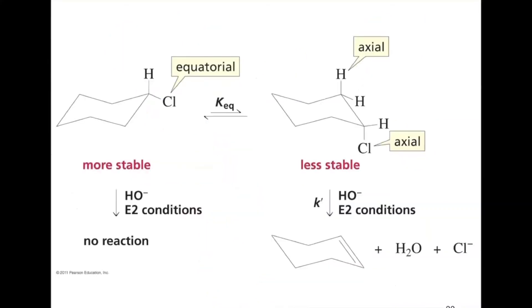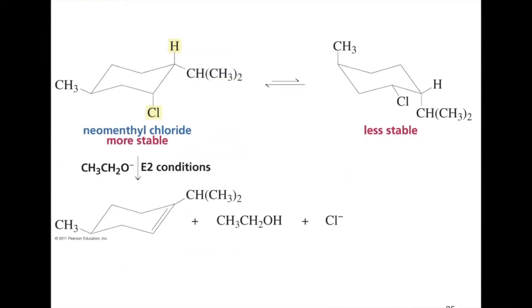Remember that big groups want to be equatorial for the most stable chair conformation. Sometimes we need a ring flip to get the alkyl halide into an axial position for anti-periplanar geometry. In this example, the leaving group and hydrogen are both in axial positions—anti-periplanar—so we get elimination directly from the most stable chair.